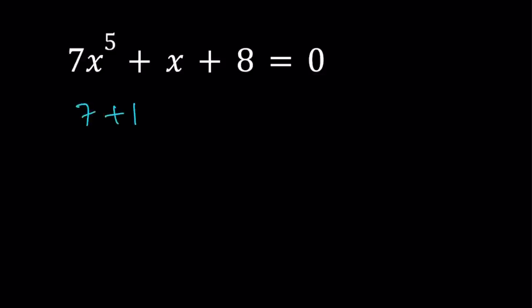So, 7 plus 1 is equal to 8. That means the odds are equal to evens. What do I mean by odds and evens? If you look at the powers of x, this is x to the power 1, this is x to the power 5, and this is x to the power 0. So if you group the coefficients as evens and odds, then the sum in each group equals each other. This tells us something important. This means that x equals negative 1 is a solution.